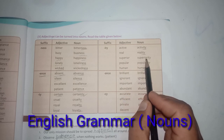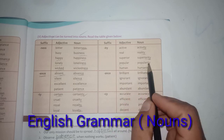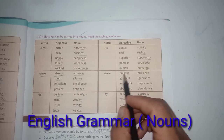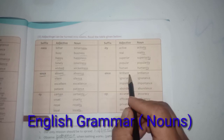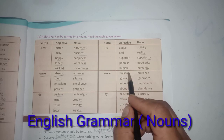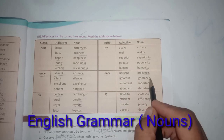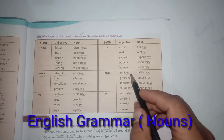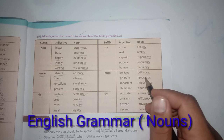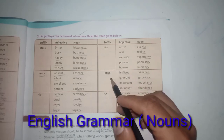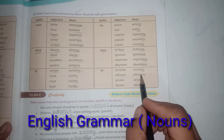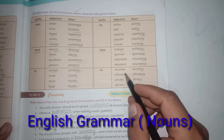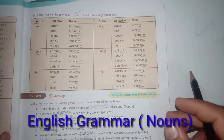Adding -ance (removing -ant): brilliant → brilliance, ignorant → ignorance, important → importance, evident → evidence. Adding -cy: accurate → accuracy, efficient → efficiency, private → privacy, decent → decency. In this way adjectives are converted to noun forms by adding these suffixes.